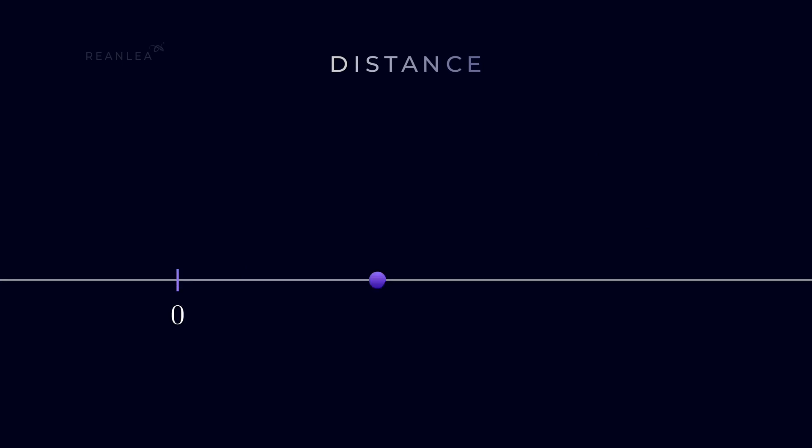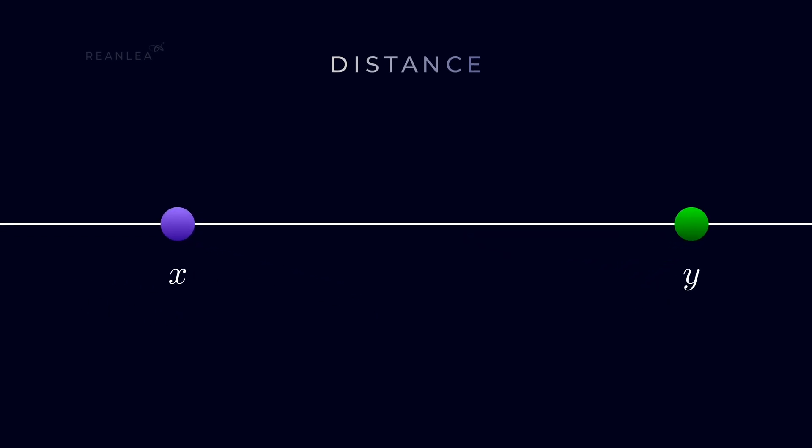Suppose we have two vectors on the real axis, x and y. Where the vector x is represented by the point placed x units away from the origin on the right. And the unit length is the length of that segment between the origin and the unit. The concept is same for the vector y also. Yet, the unit length can also be described as the distance between the origin and the unit.